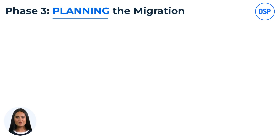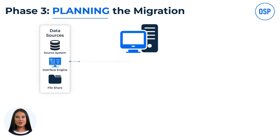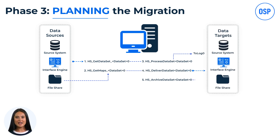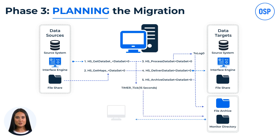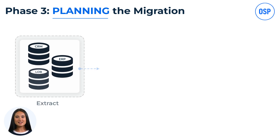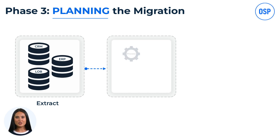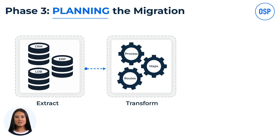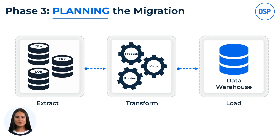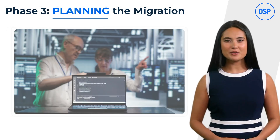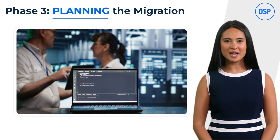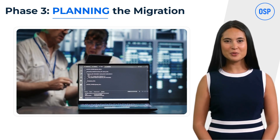Phase 3 is Planning the Migration. This involves data mapping — matching data fields from your legacy system to Epic EHR — to ensure data is accurately transferred and remains functional in the new system. Use data mapping tools or spreadsheets to document this process. Select the right ETL (extract, transform, load) tools compatible with both your legacy system and Epic EHR. Custom scripts can also be written for specific tasks. Finally, create a detailed migration plan with timelines, milestones, risk management strategies, and contingency plans.